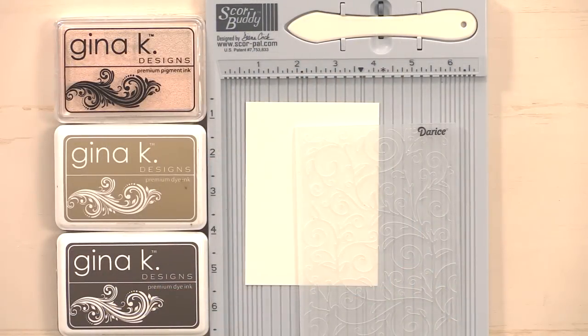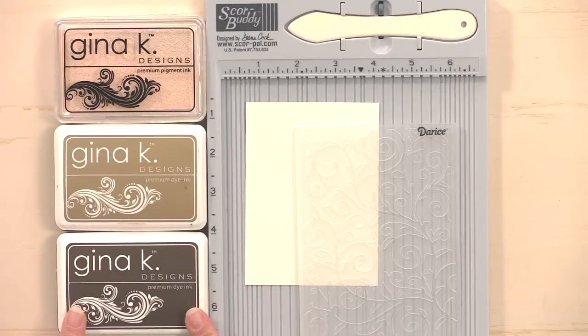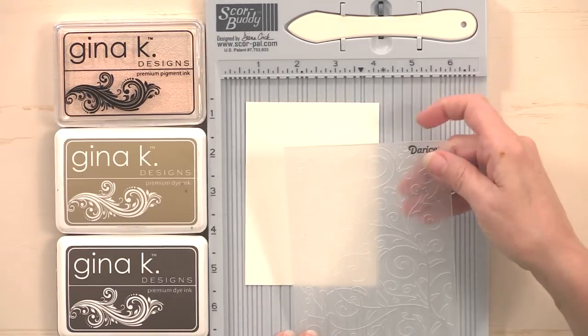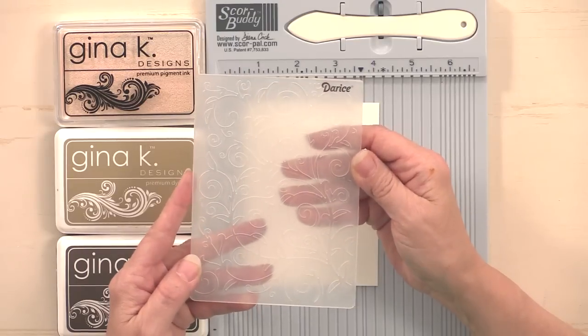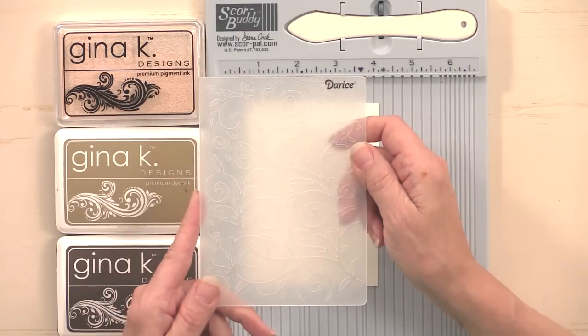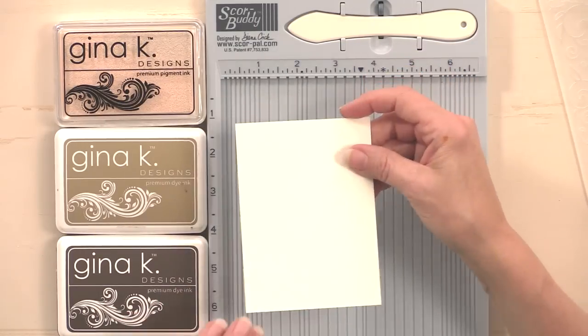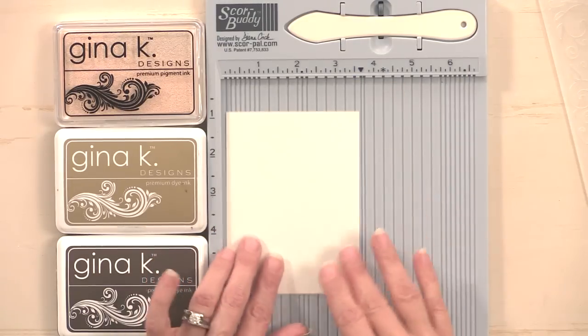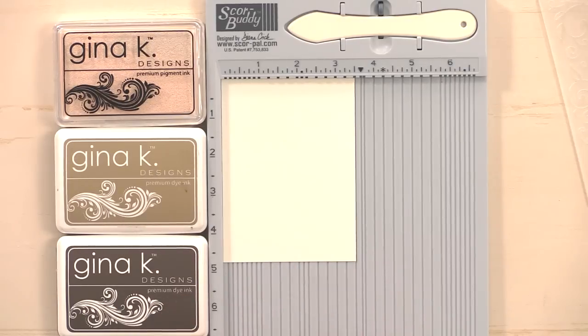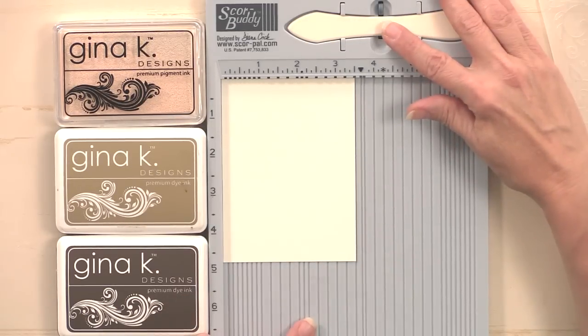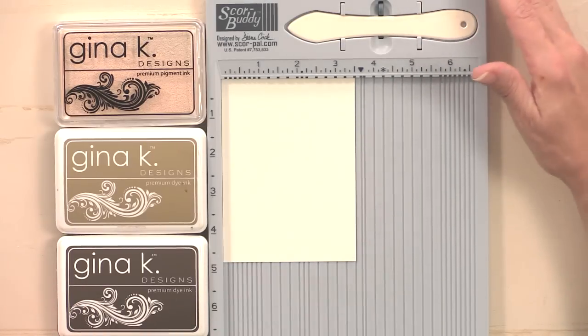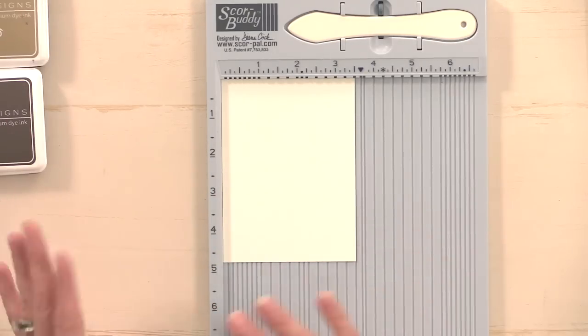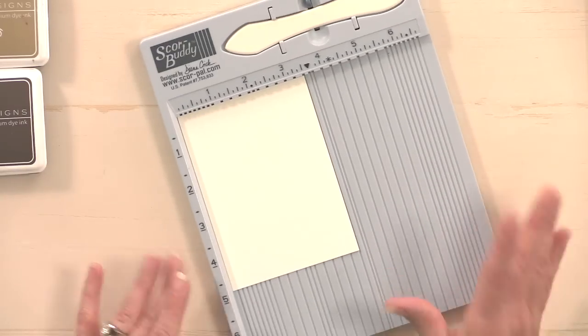First you're going to need some ink, and the ink pads I'm using today are the Gina Kay Designs Charcoal Brown, the Craft, and the Ivory Pigment Ink. Then you're going to need an embossing folder. I'm using the Darice Embossing Folder called Vine. Then you're going to need some cardstock. I've cut a piece down to three and a half inches by four and three quarter inches. This is our layering weight ivory cardstock. Along with the cardstock you're going to need a score buddy or some sort of scoring device that can score on half inch marks. Then I'll show you the stamps and dies I used when I assemble the card.